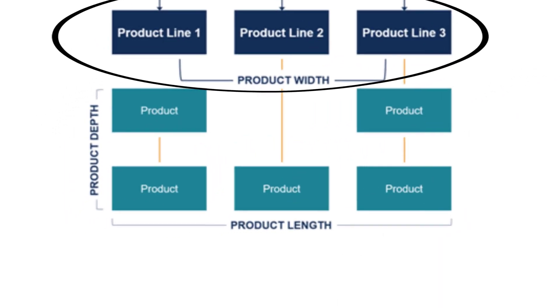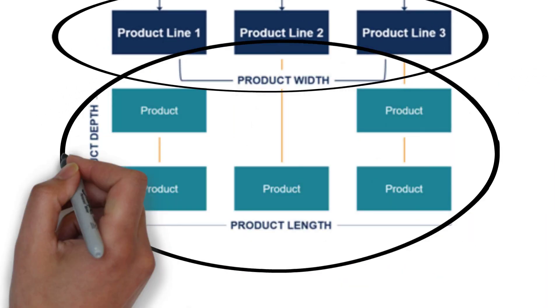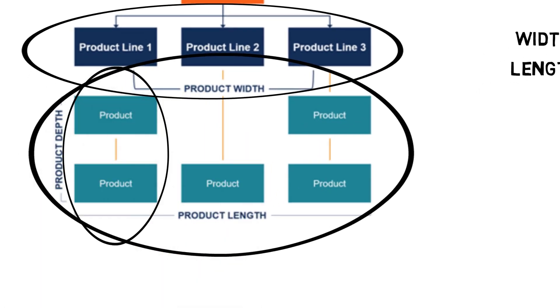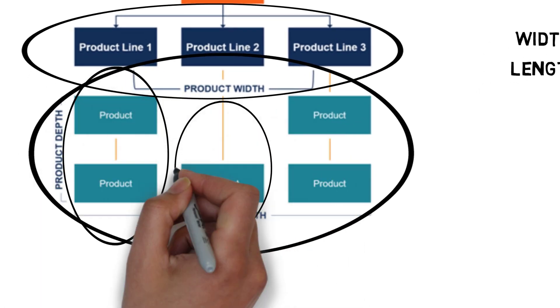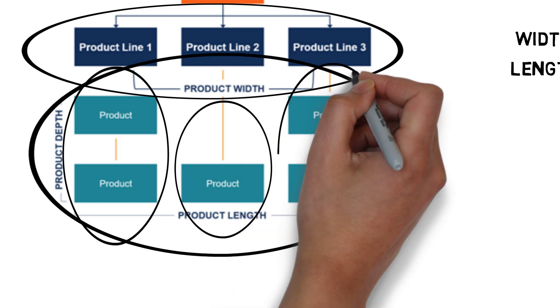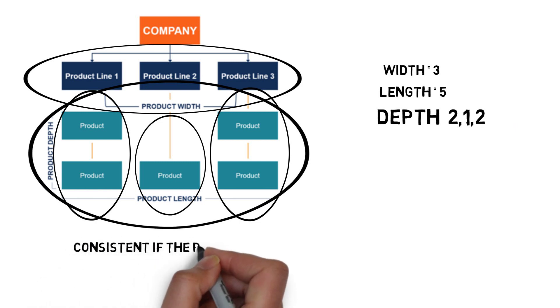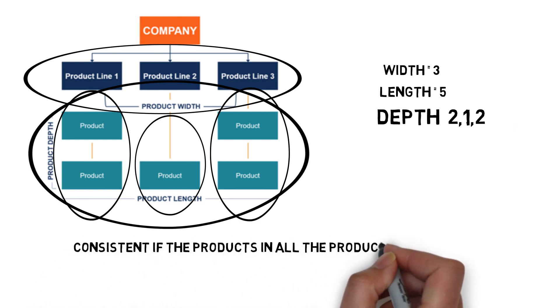A width of 3, a length of 5. Product line 1, depth of 2. Product line 2, depth of 1. Product line 3, depth of 2. The mix is considered consistent if the products in all the product lines are similar.